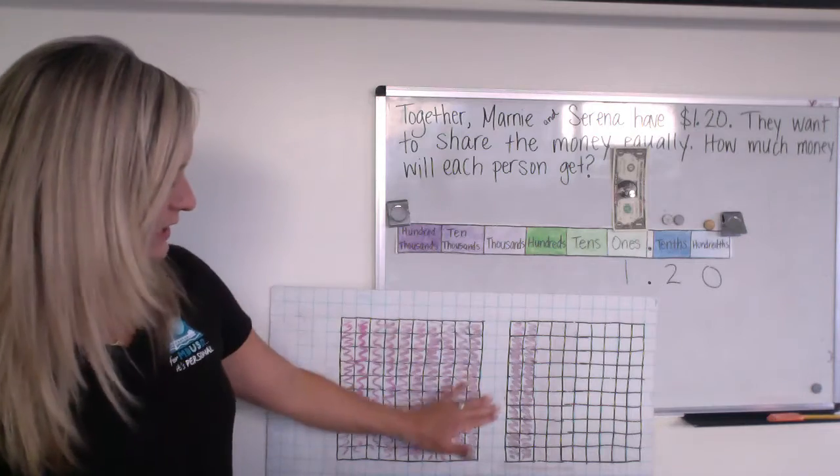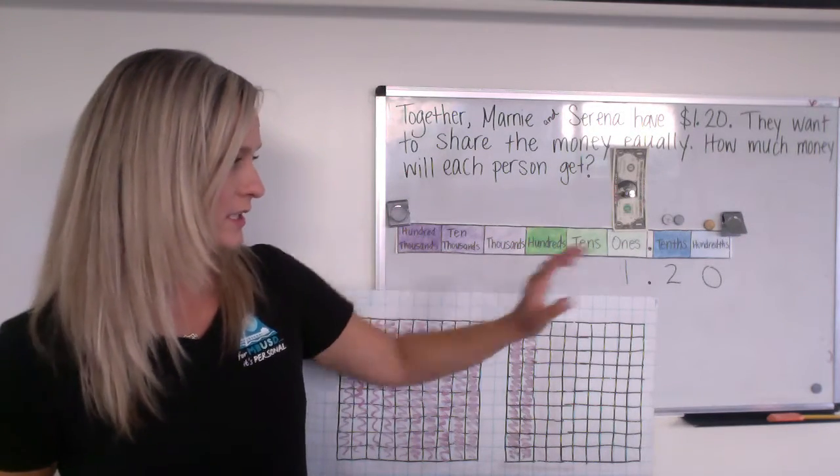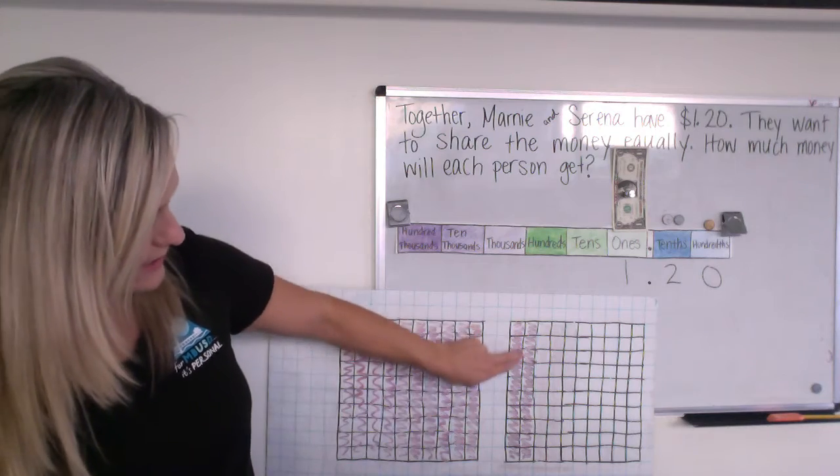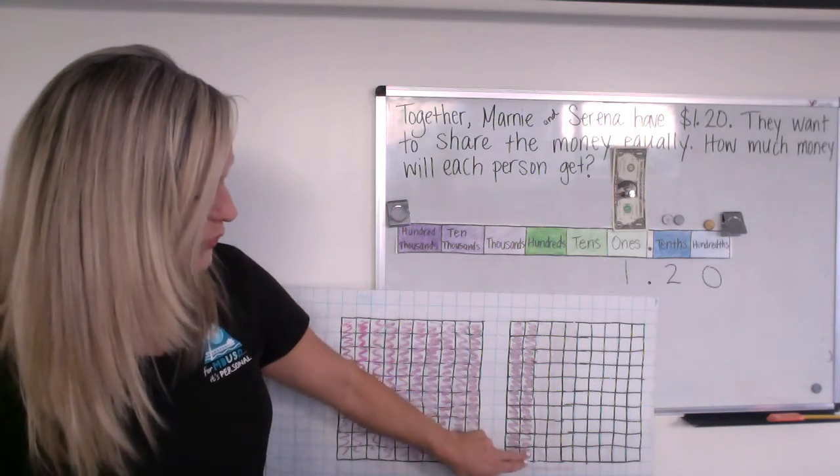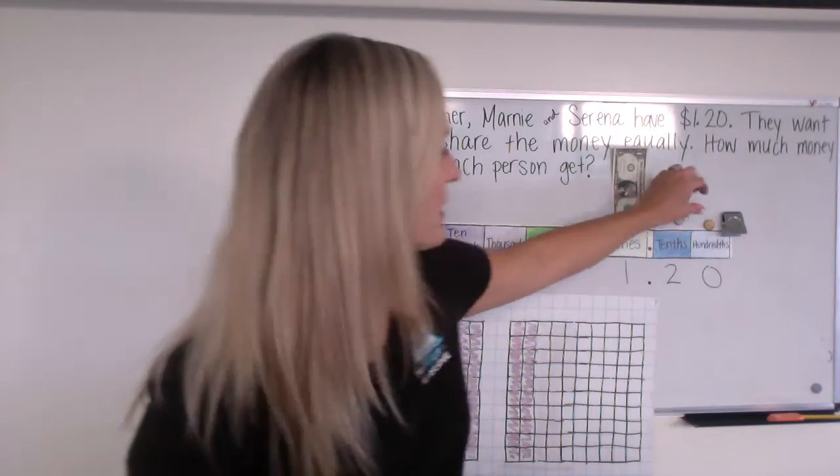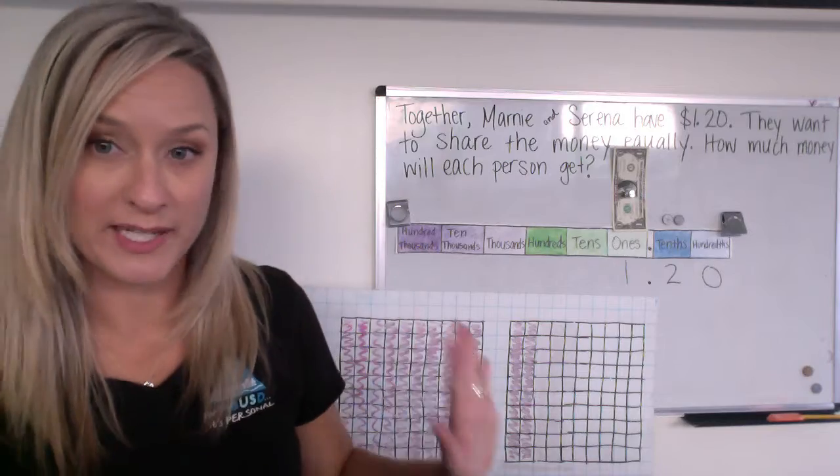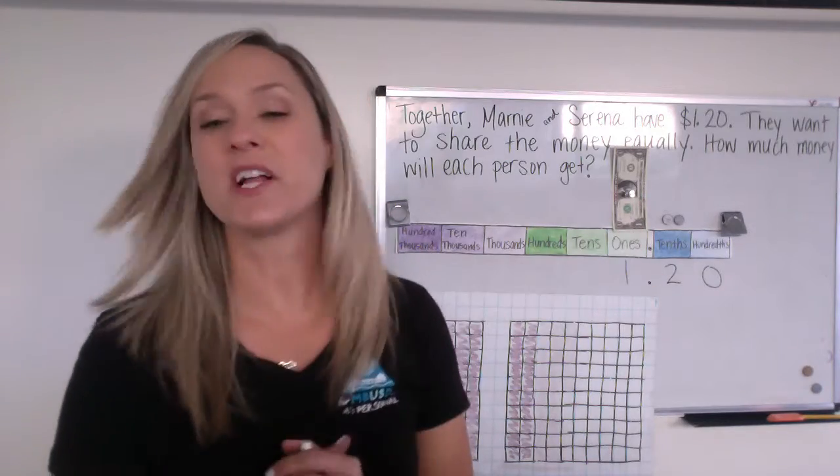And then we can also picture it like this. One hole filled in that would represent our dollar. And then 20 cents, we have two tenths filled in, two dimes. Okay. Now I better take off this penny because that one's out for right now. There are no pennies. Okay. So we've got $1.20.